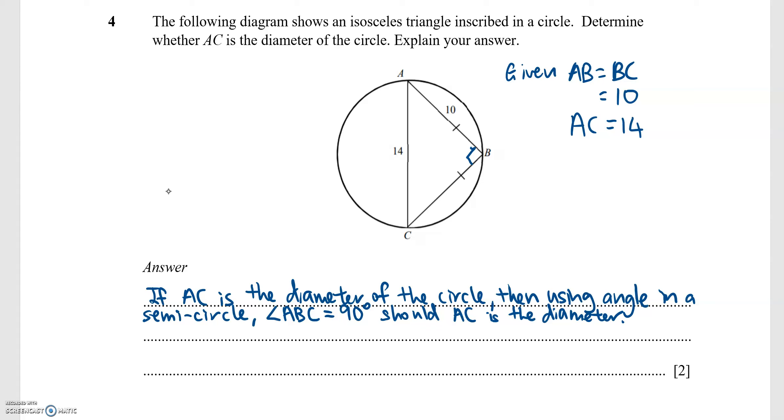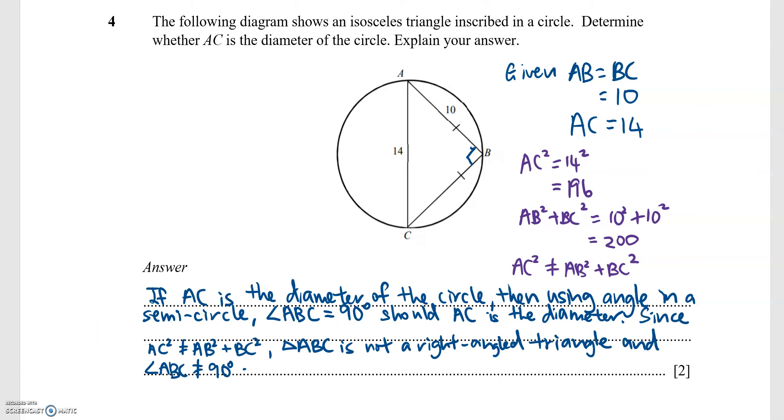So we will now check if triangle ABC is a right angle triangle. Let's do a quick check: AC squared is 14 squared, which is 196. AB squared plus BC squared is 200. So we conclude that AC squared is not equal to AB squared plus BC squared.